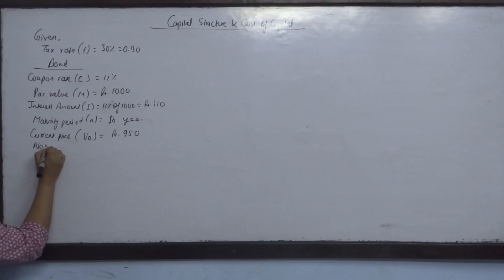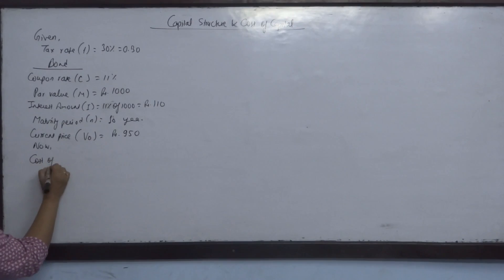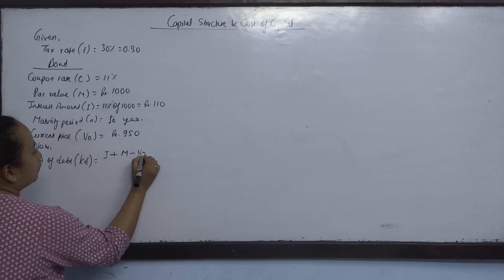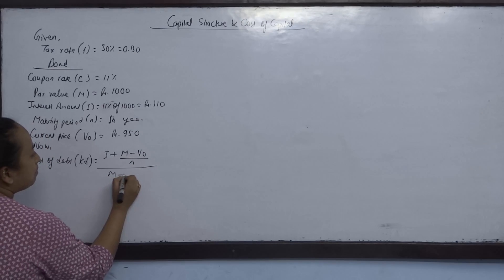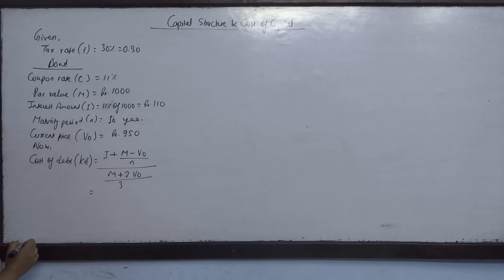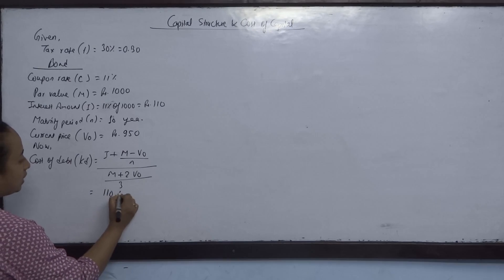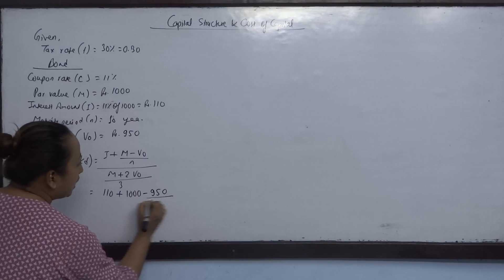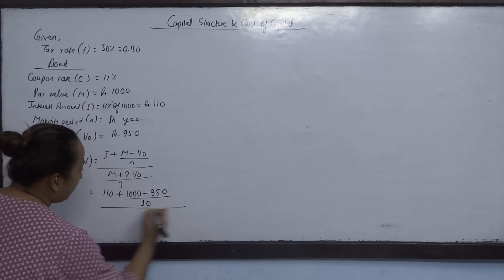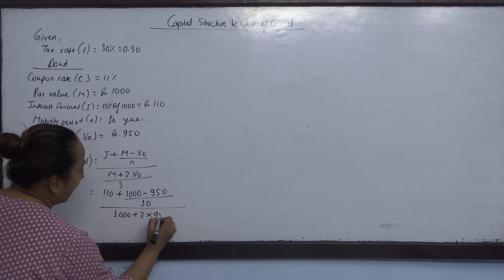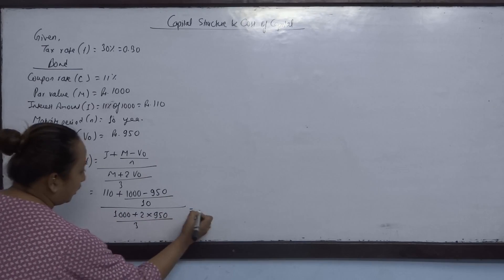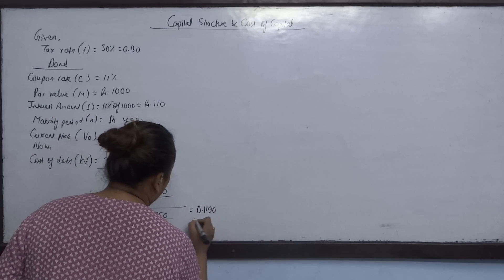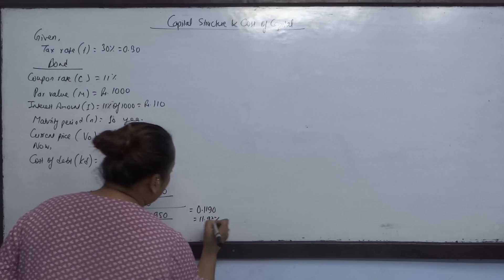For the redeemable bond, the cost of debt (Kd) formula is: Kd = [I + (M - V0)/n] / [(M + 2*V0)/3]. Here, interest I = 110 (11% on face value of 1000), M = 1000, V0 = 950, n = 10 years. Solving: Kd = 11.90%.